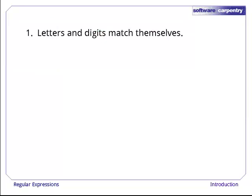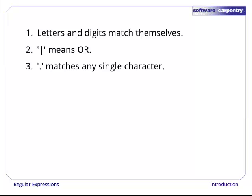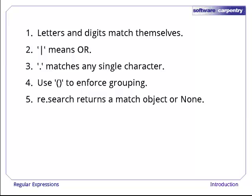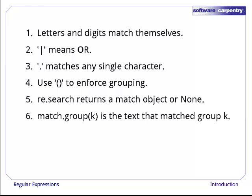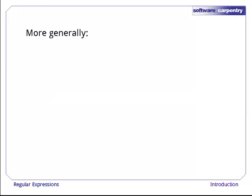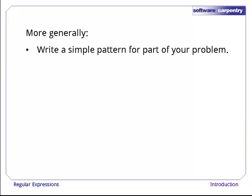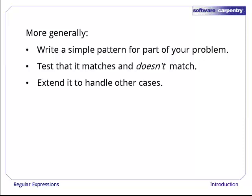To recapitulate, letters and digits in a pattern match against themselves. The character A in a pattern matches the character A in the data, and so forth. Vertical bar means or, dot matches any single character, we use parentheses to enforce grouping, re.search returns a match object if the pattern matches, or none if there isn't a match, and if a match was found, match.group of k is the text that matched group k. More generally, stepping back from the details of regular expressions, the right way to build up patterns is to start with something simple that matches part of the data you're working with. Test it against your data, but also test that it doesn't match things that it shouldn't, because it can be very hard to track down false positives. Once you've done that, extend it piece by piece to handle other cases. We'll take a look at how to do more of this in the next episode.